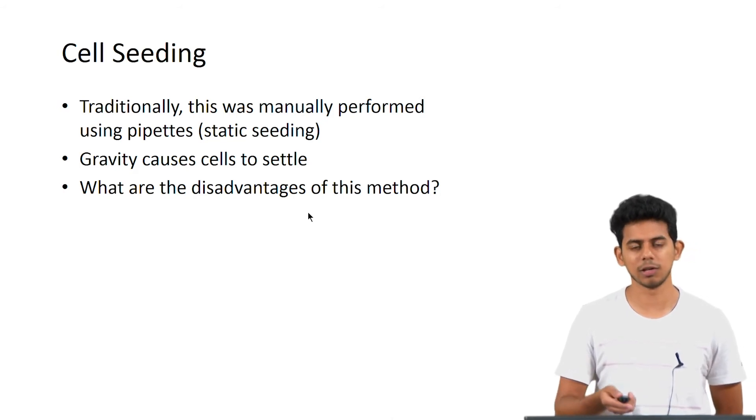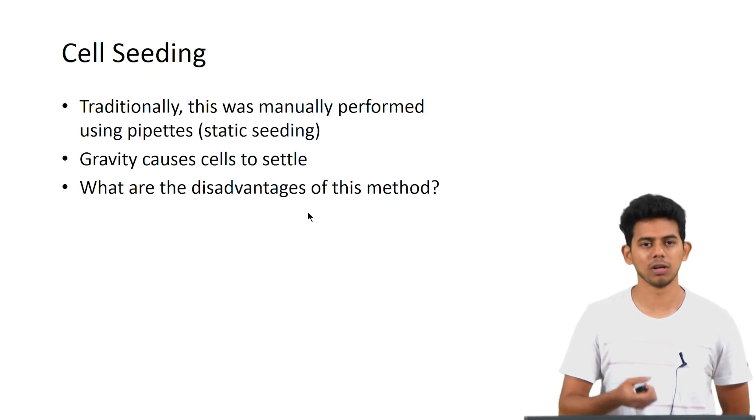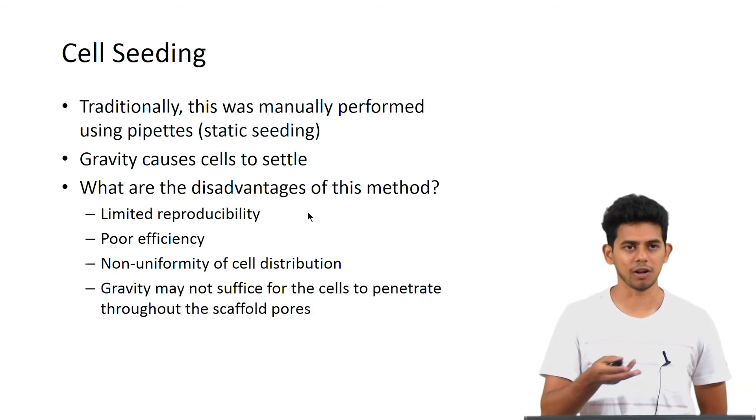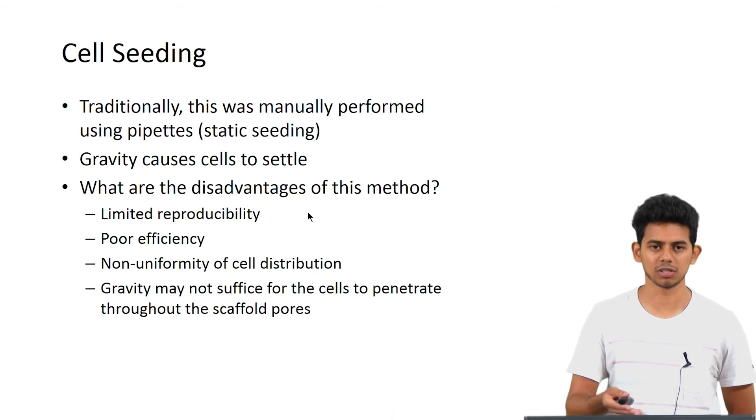Traditionally cell seeding was done by dropping the cells onto a scaffold using a pipette. Here you rely on gravity to take the cells into the scaffold. But the disadvantages of this is there would be an uneven distribution of the cells into the scaffold and there may not be a complete penetration throughout the scaffold, and it is poor efficiency and reproducibility is also affected.